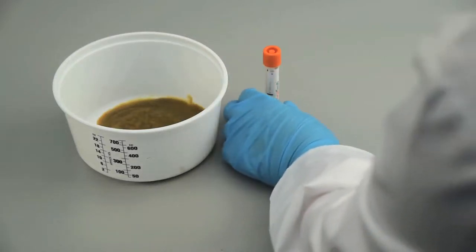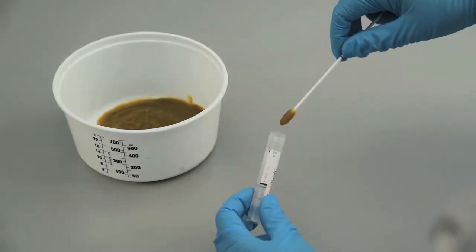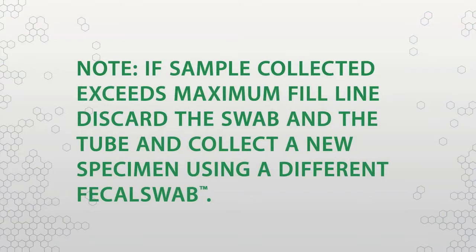After collection, transfer the swab into the fecal swab tube and check that the maximum filling line, max fill, on the label is not exceeded. Note, if sample collected exceeds maximum fill line, discard the swab in the tube and collect a new specimen using a different fecal swab.